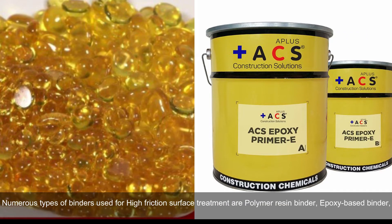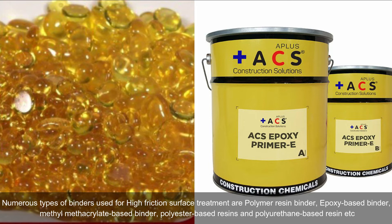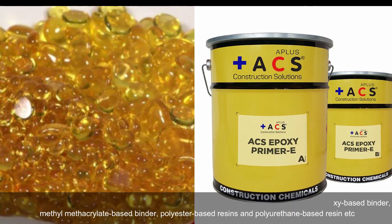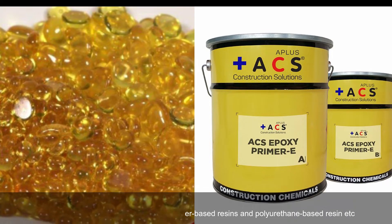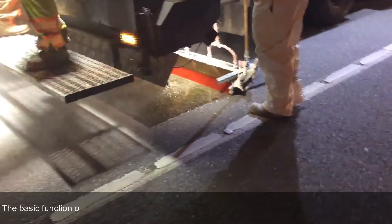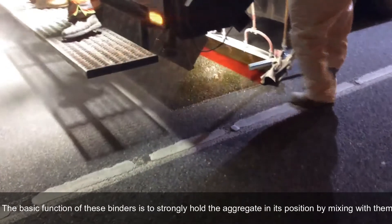The binders used for high friction surface treatment include polymer resin binder, epoxy-based binder, methyl methacrylate (MMA) based binder, polyester-based resins, and polyurethane-based resin. The basic function of these binders is to strongly hold the aggregate in its position.